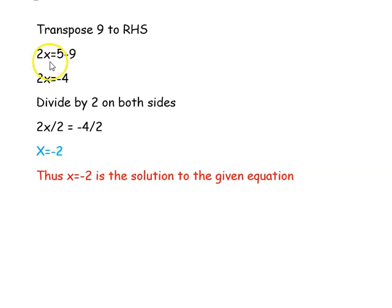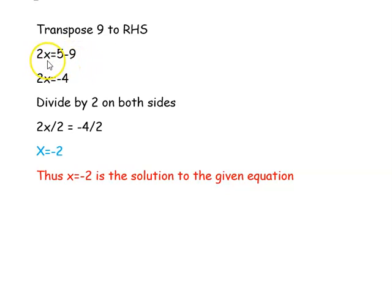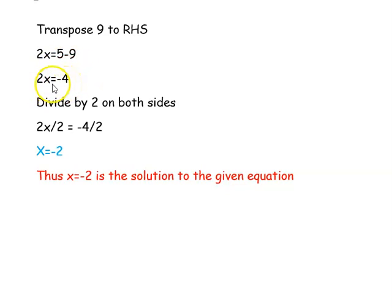Next step, we are transposing plus 9 from the left hand side to the right hand side. It will become minus 9. So the equation is 2x equal to 5 minus 9. 5 minus 9 is minus 4, so 2x is equal to minus 4.